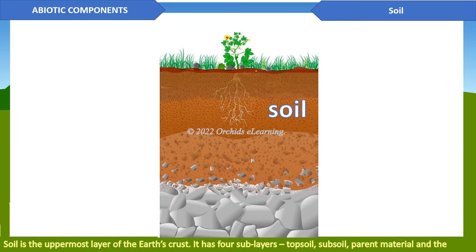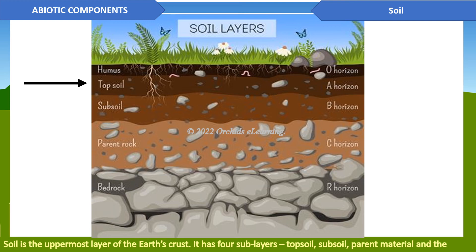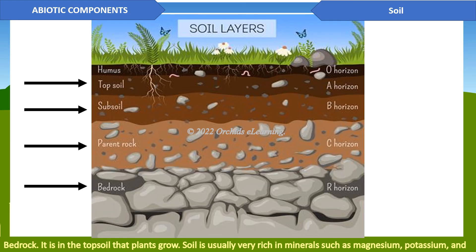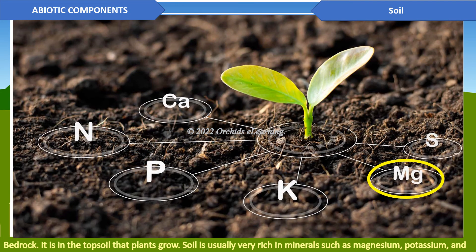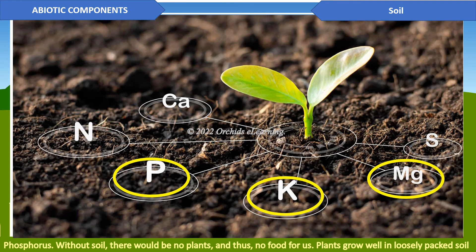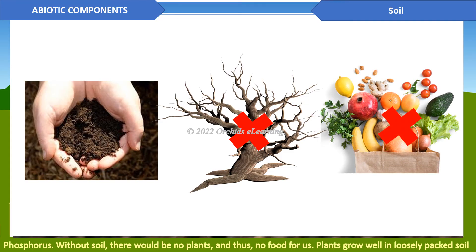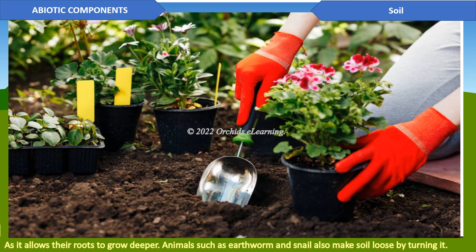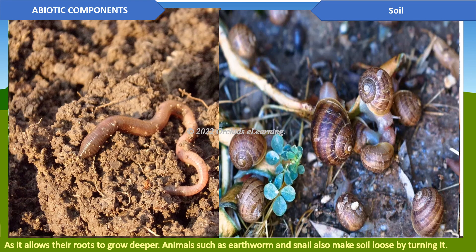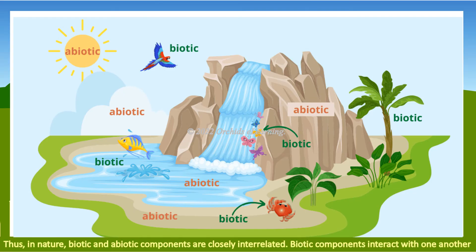Soil is the uppermost layer of the Earth's crust and has four sub-layers: topsoil, subsoil, parent material, and bedrock. It is in the topsoil that plants grow. Soil is usually very rich in minerals such as magnesium, potassium, and phosphorus. Without soil there would be no plants and thus no food for us. Plants grow well in loosely packed soil as it allows their roots to grow deeper. Animals such as earthworms and snails also make soil loose by turning it. Thus, in nature, biotic and abiotic components are closely interrelated.